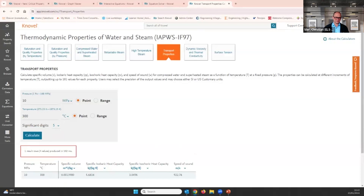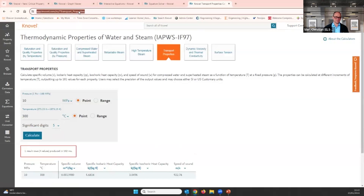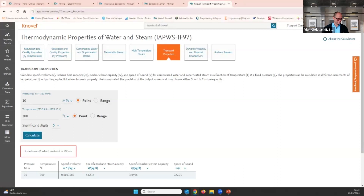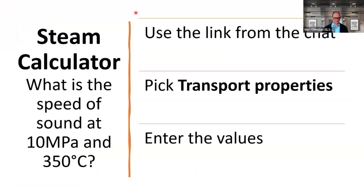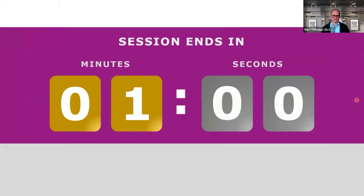Now it's your turn again to work with the steam calculator. I'll add the link into the chat. What I want you to do: use the link, select the Transport Properties calculator, and calculate the speed of sound at 10 megapascal and 350°C. Enter those values and tell me the result. Time is running.